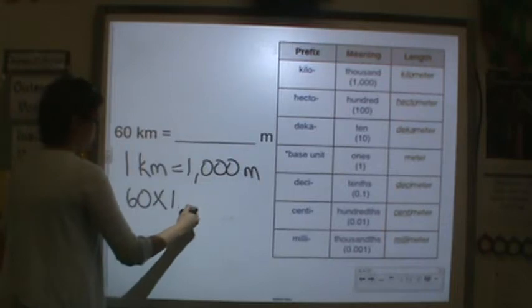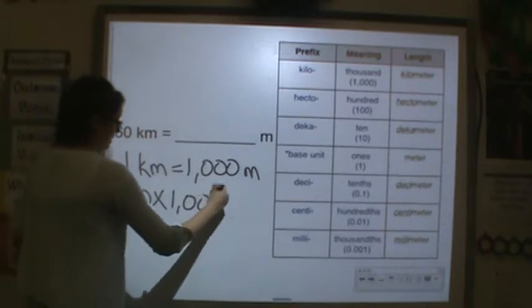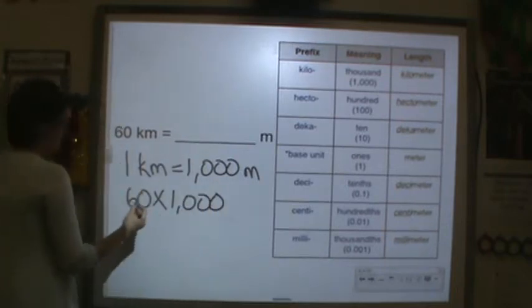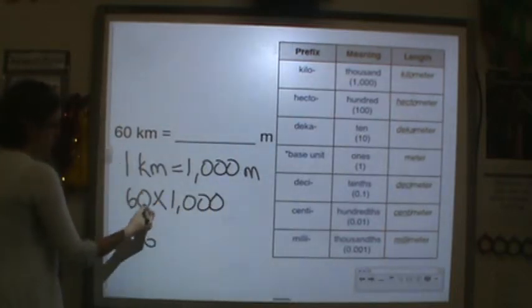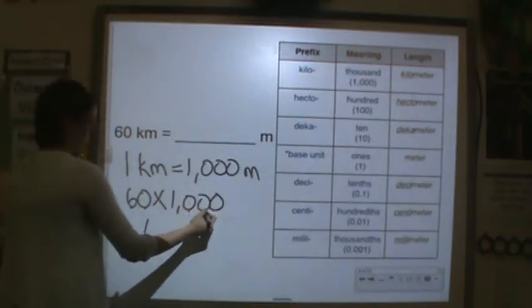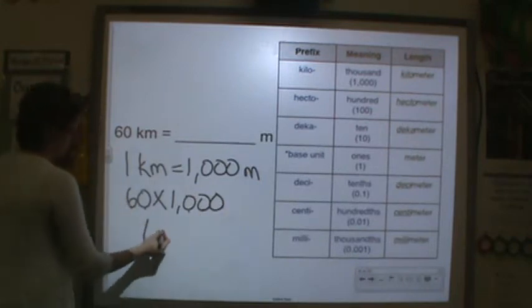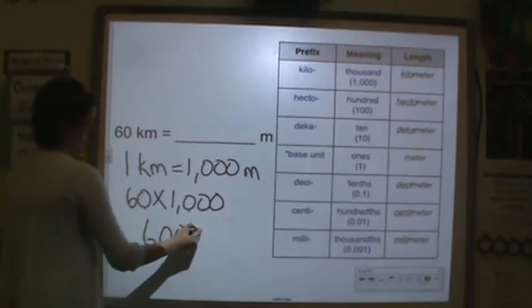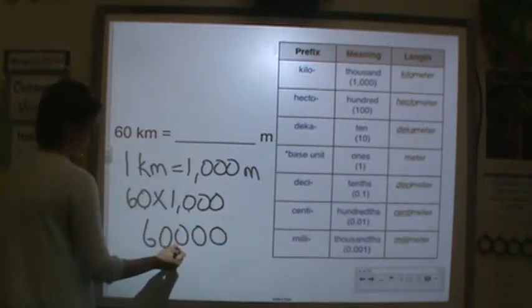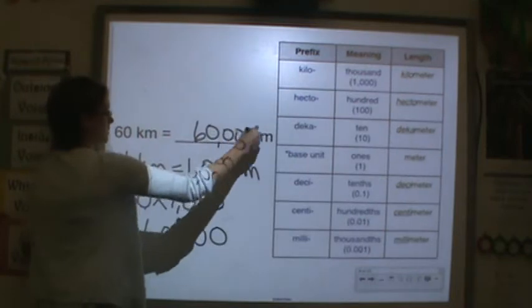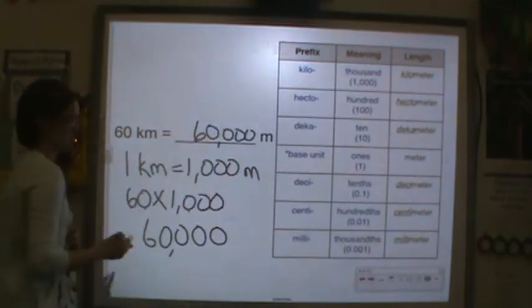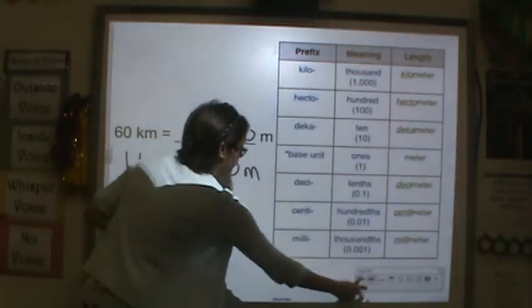Now 60 kilometers. Multiply 60 times 1,000. Basic facts: 6 times 1 is 6, then count four zeros — so 60,000 meters.